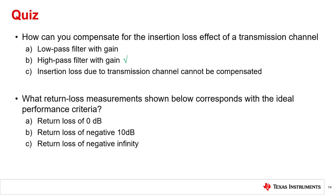Number two: what return loss measurement corresponds with the ideal performance criteria? Is it A, a return loss of zero decibels; B, a return loss of negative 10 decibels; or C, a return loss of negative infinity? The answer is C. Return loss is defined as the ratio of incident power to reflected power. In a perfectly terminated system, reflected power is zero, and hence return loss will be negative infinity in a perfectly terminated system.